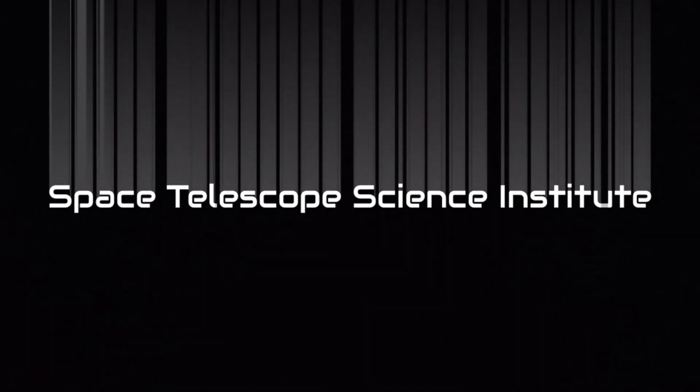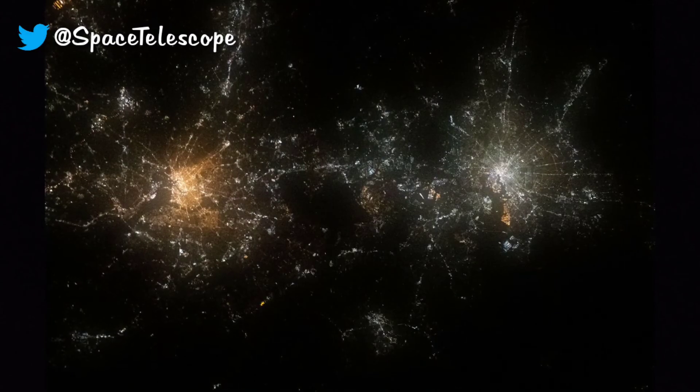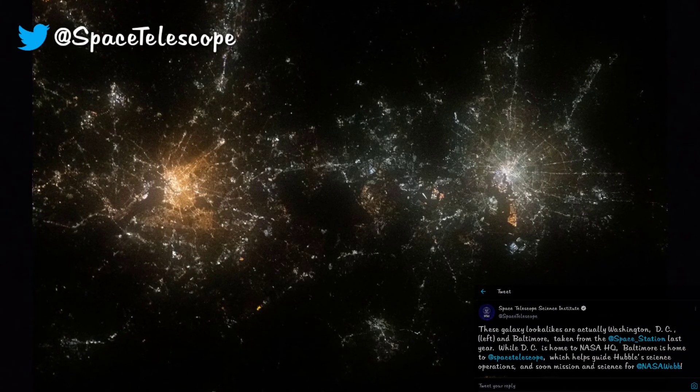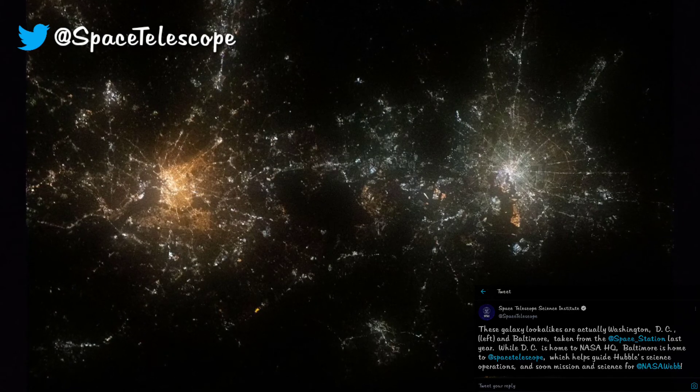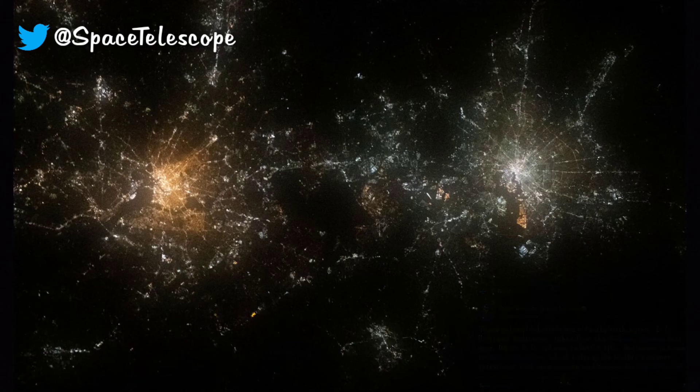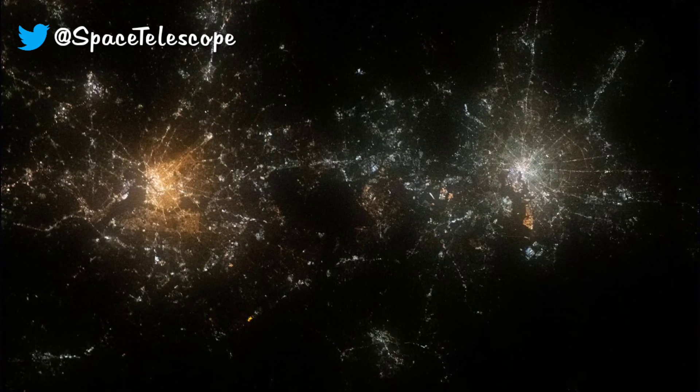Space Telescope Science Institute: What looks like galaxy clusters from computer simulations are actually cities, Washington D.C. and Baltimore, as captured from space station last year. While D.C. is home to NASA headquarters, Baltimore is home to Space Telescope Science Institute, which helps guide Hubble's science operations and soon for James Webb too.